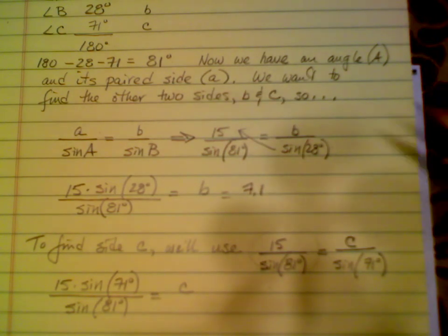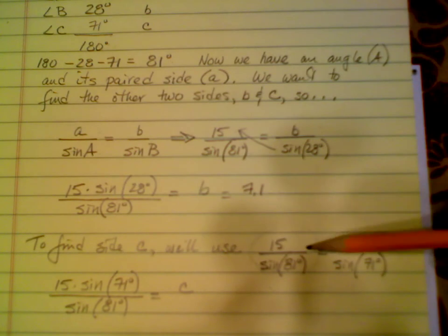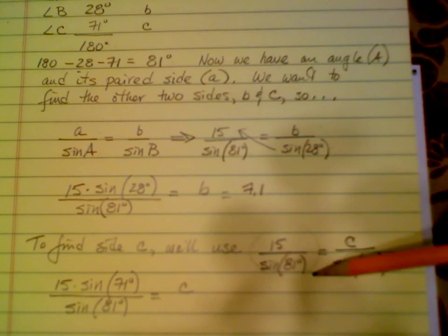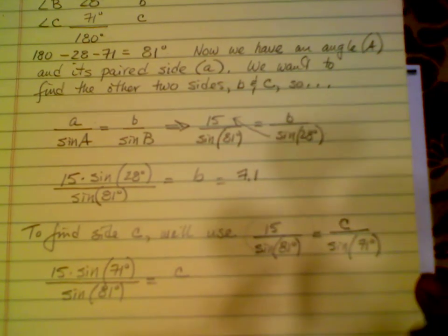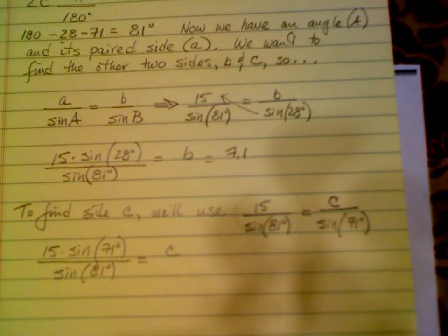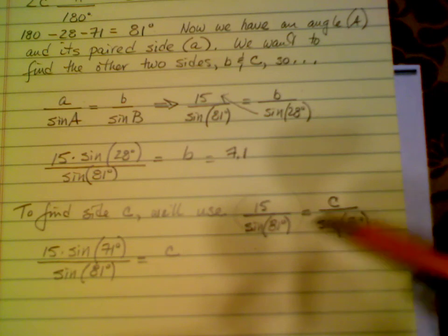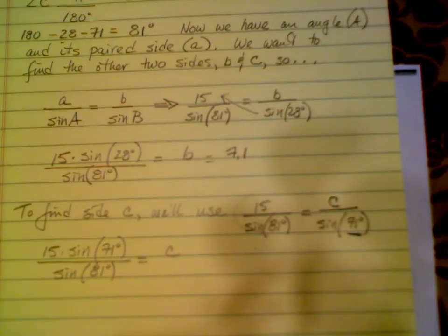Now, to find side C, we'll use essentially the same proportion, but I don't want to key all of this in again. What I want to do is use the calculator and have it just remember what I've done and easily incorporate this angle here, 71 degrees, into my calculations. So, to do that in the calculator, we'll bring it over.